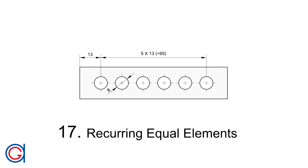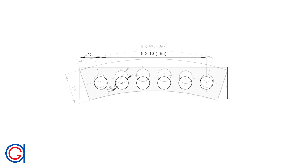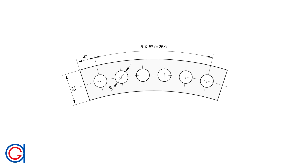Rule 17: How to dimension recurring equal elements. In this example we have recurring equal circles, but they could equally be triangles, squares, rectangles, etc. Rather than dimensioning each one, we dimension the distance to the center of the first, then use notation such as 5 times 13 equals 65 to show the remaining circle centers. The last undimensioned part is implied equal to 13. We also only need to dimension one of the equal circles. For a curved part, the same method applies but the dimension values are in angular degrees instead of millimeters.